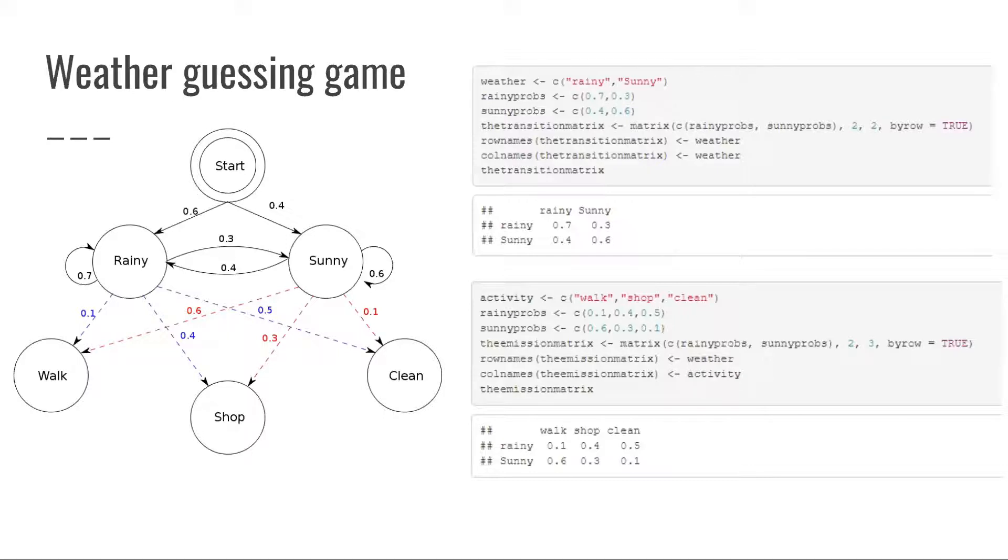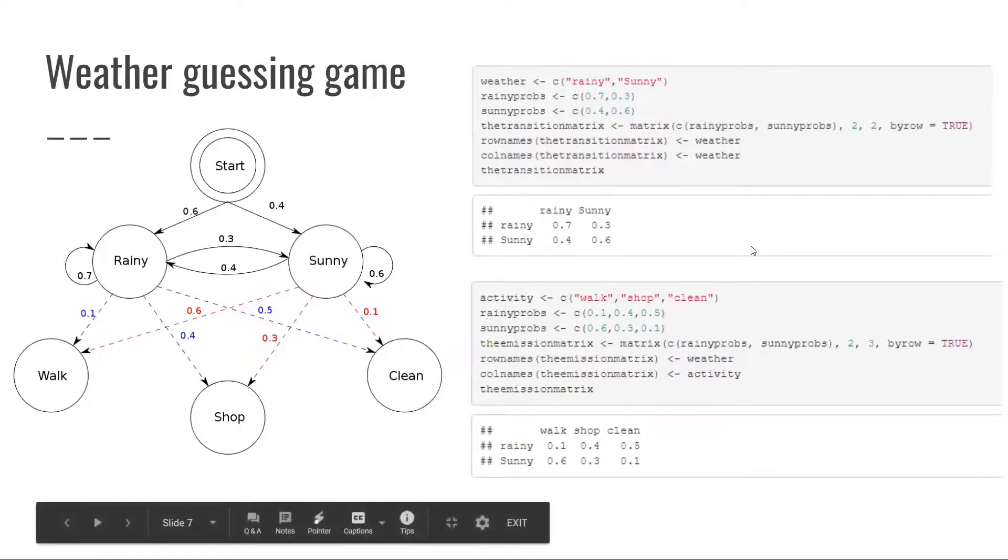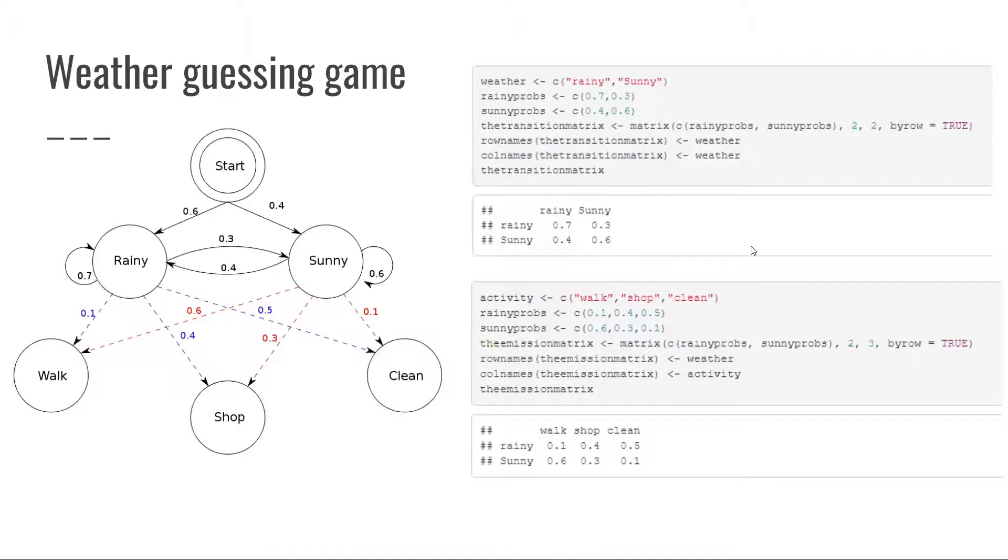And A believes that the weather operates as a discrete Markov chain, where there are two states, raining and sunny, but she cannot observe them directly. That is, they're hidden from her. And on each day, there's a certain chance that Bob will perform one of the following activities, as you can see on the diagram, depending on the weather: walk, shop, or clean. Since B tells A about his activities, those are the observations. And this entire system is that of a hidden Markov model.